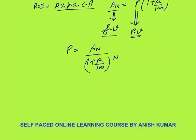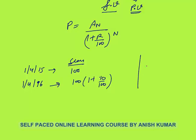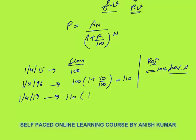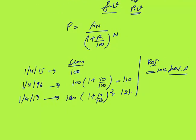For example, on 1st April 2015 a sum whose value is 100. On 1st April 2016 its value will be 100 × (1 + 10/100), if the rate of interest is 10% per annum compounded annually. On 1st April 2017 its value will be 100 × (1 + 10/100)² = 121. So this is the amount after 2 years.